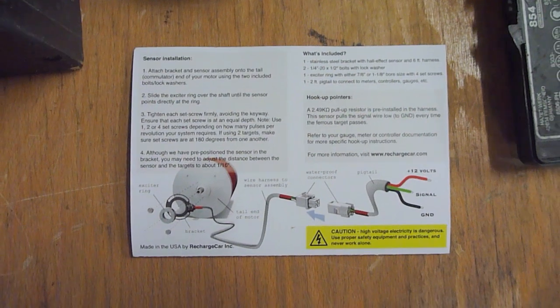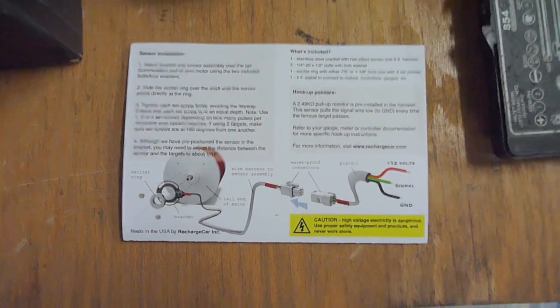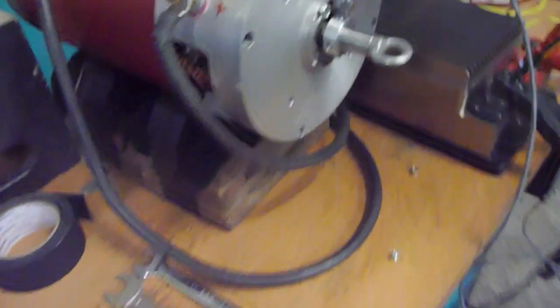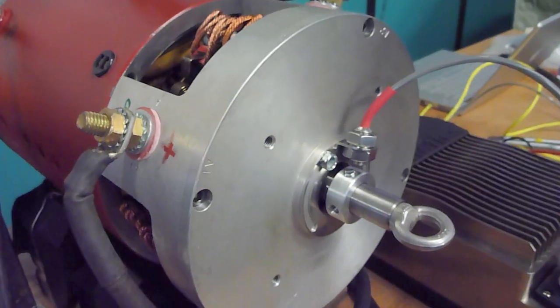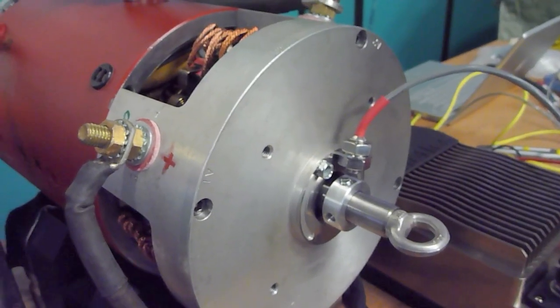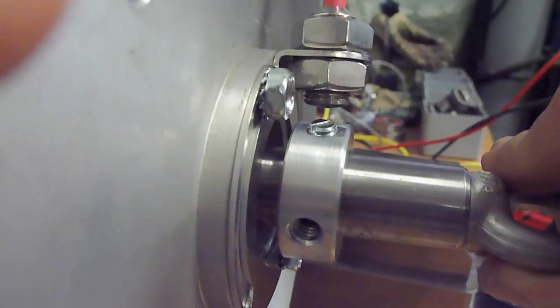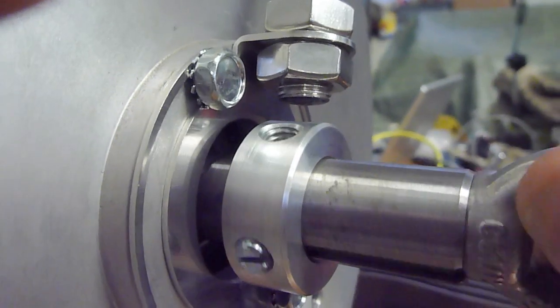This one is about the RPM sensor from Recharged Car. I already mounted it in the back or on the C-end of our Warp 9. I have two screws in now.